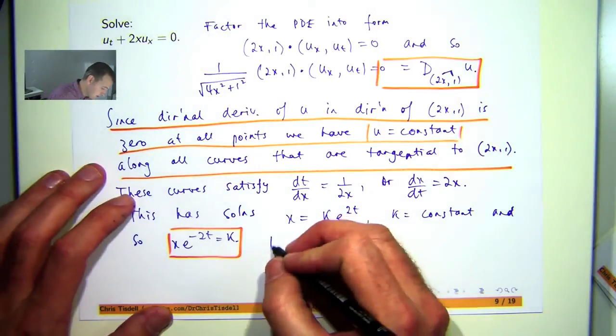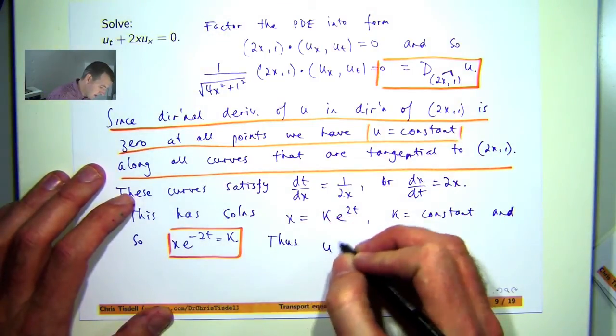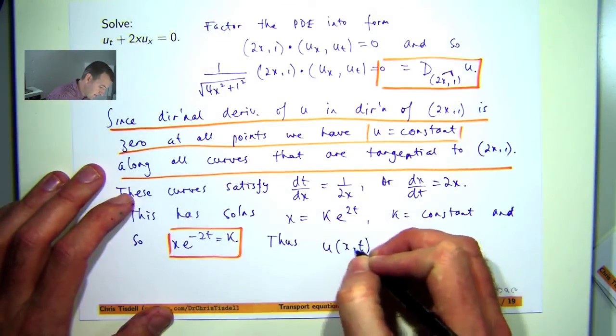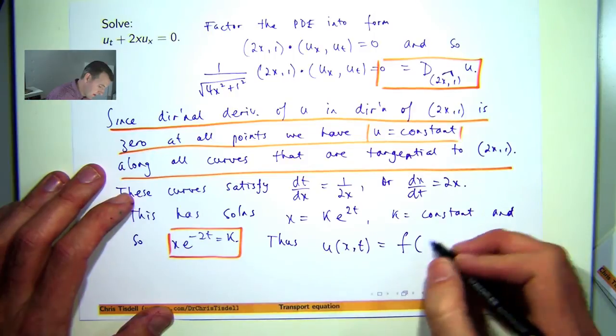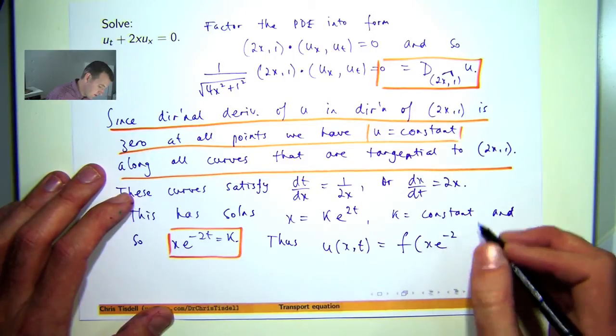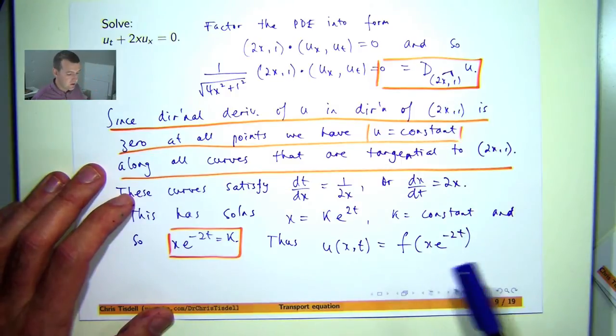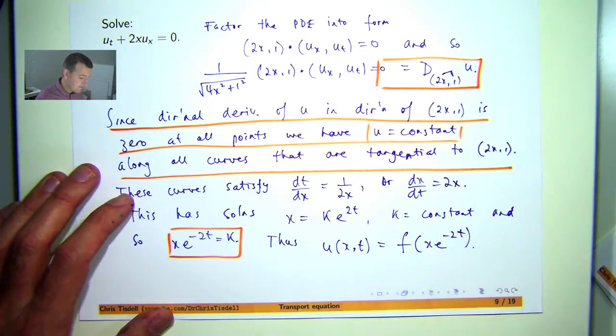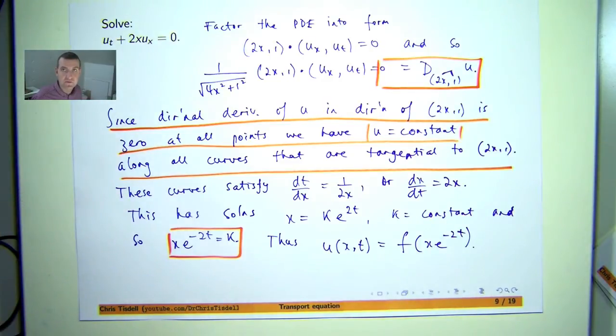So what this means is that the solution to our problem is a function of x times e to the minus 2t, where f is an arbitrary but differentiable function.